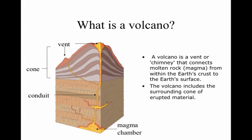So what is a volcano? Well, a volcano is a vent, or sometimes called a chimney, that connects molten rock — which we call magma when it's underground within the earth's crust — to the surface. The volcano includes the surrounding cone of the erupted material. Molten earth, which is part of the mantle down below, is called magma, and this is a magma chamber.